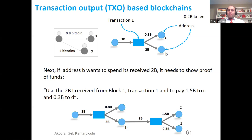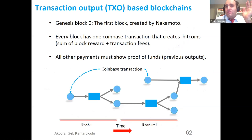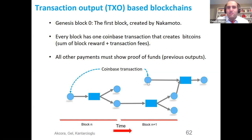If you leave a high transaction fee, miners are more incentivized to include your transaction in a block. In the Genesis block — the first block created by Nakamoto on January 3rd, 2009 — every block has one Coinbase transaction that creates Bitcoins. Miners receive block rewards plus transaction fees. All other payments must show proof of funds by telling which previous output is being spent. Coinbase transactions are shown as parentless nodes — these are the money-printing transactions.